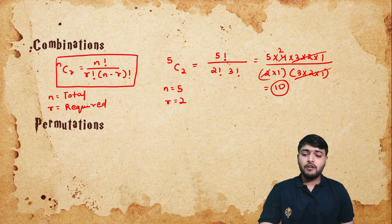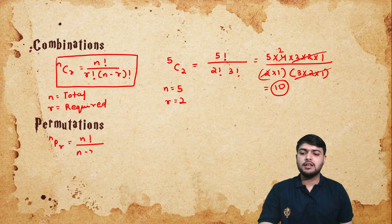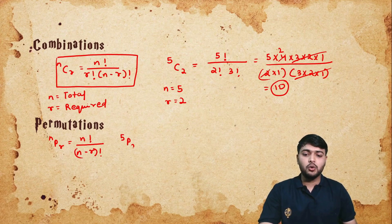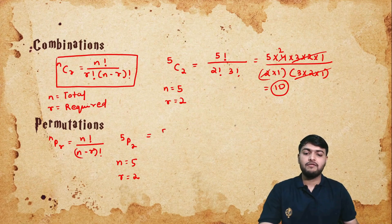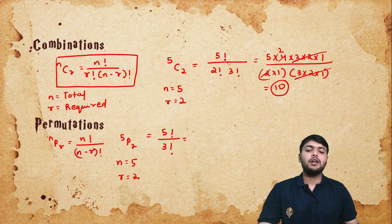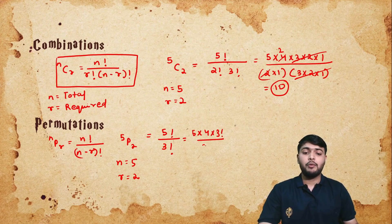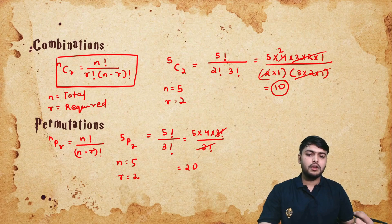Similarly, the formula for permutation is nPr = n factorial upon (n minus r) factorial. So if you are asked the value of 5P2, n is 5 and r is 2. Substituting: 5 factorial upon 3 factorial. 5 factorial can be written as 5 × 4 × 3 factorial upon 3 factorial — this cancels out, giving the answer 20. The value of 5P2 is 20.